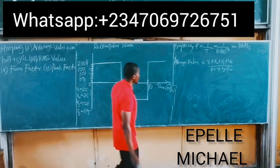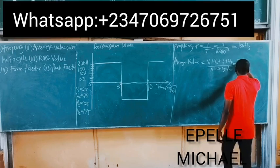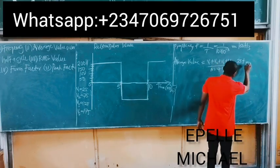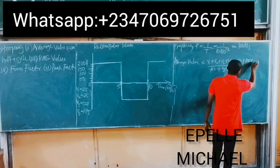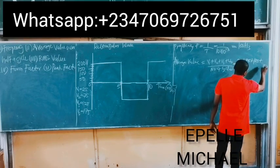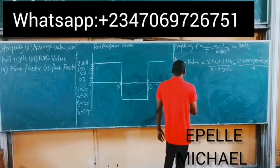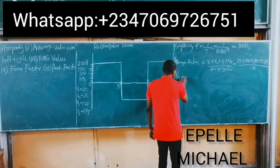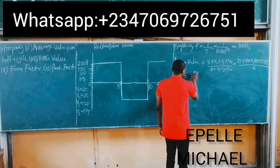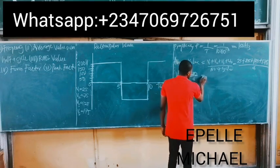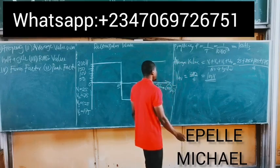So therefore, the average value is simply sum of those mid-ordinate voltages. V1 is 25, plus V2 is 75, plus V3, 125, plus 175, V4, all over 4. Average value is now equal to 400, all over 4, which equals 100 volts. So the average value is simply 100 volts.